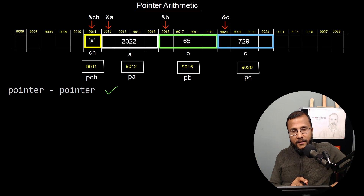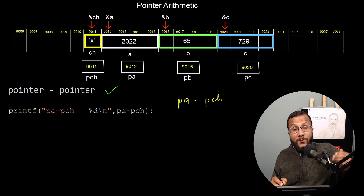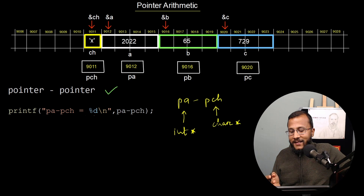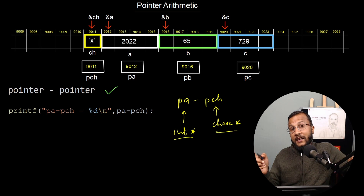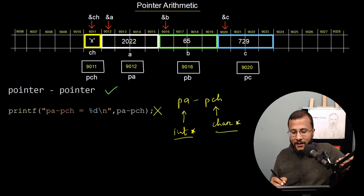Let's look at the example pa minus pch. pa is a pointer to an integer (int*), while pch is a character pointer (char*). Subtracting a character pointer from an integer pointer is not allowed because both of them are of different types. So this statement will give you a compiler error. You cannot do pa minus pch.